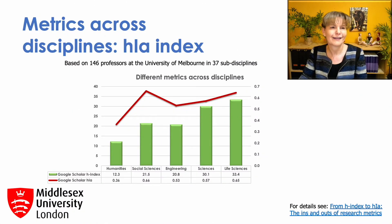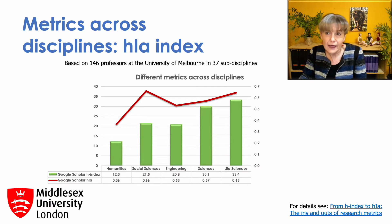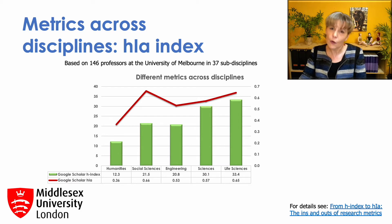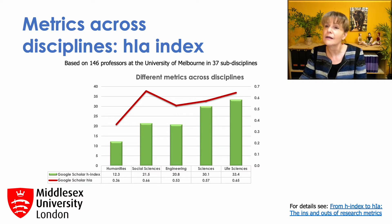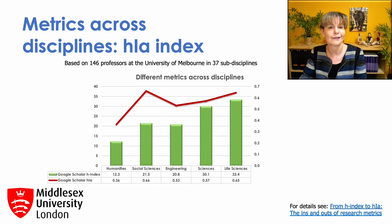Even when using Google Scholar as a data source, publications and citations will still differ significantly across disciplines. And thus, the H-Index, which is a combination of the number of papers and citations, will also differ significantly across disciplines. This graph shows that the average H-Index for a professor in the life sciences is similar to that in the sciences, but nearly three times as high as for a professor in the humanities, and more than one and a half times as high as for a professor in the social sciences and engineering.